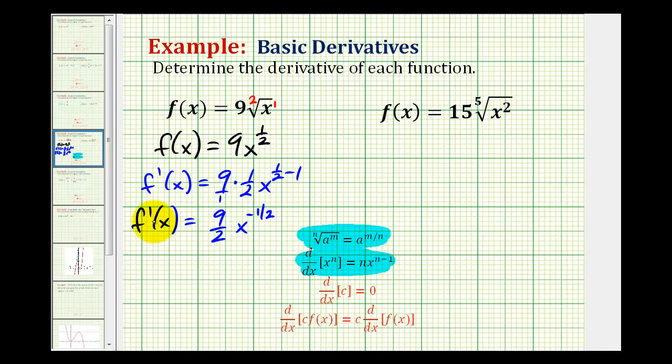And we don't want to leave our derivative in this form because of the negative exponent. So if we move this down to the denominator, it would be x to the positive one-half. So let's go ahead and do that. We'll have f prime of x is equal to nine all over two x to the power of one-half.